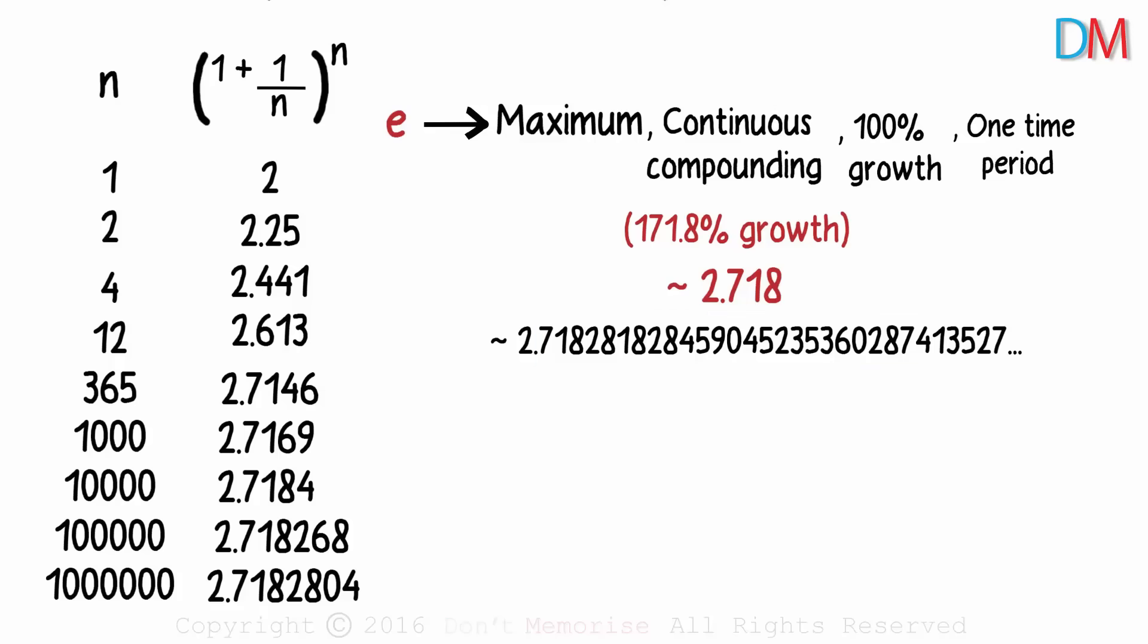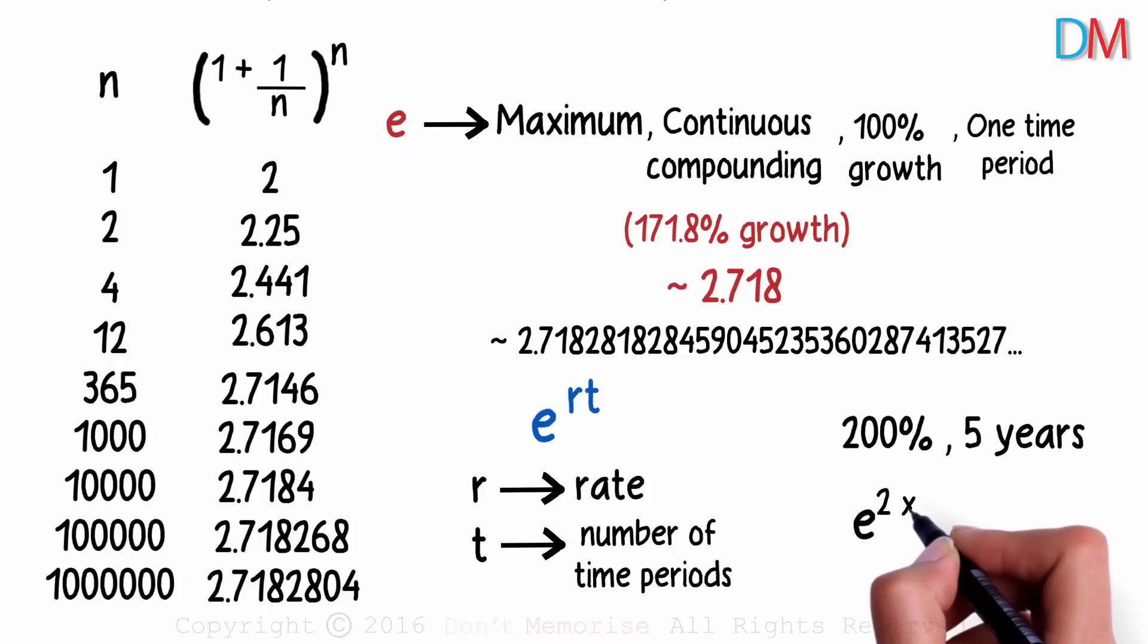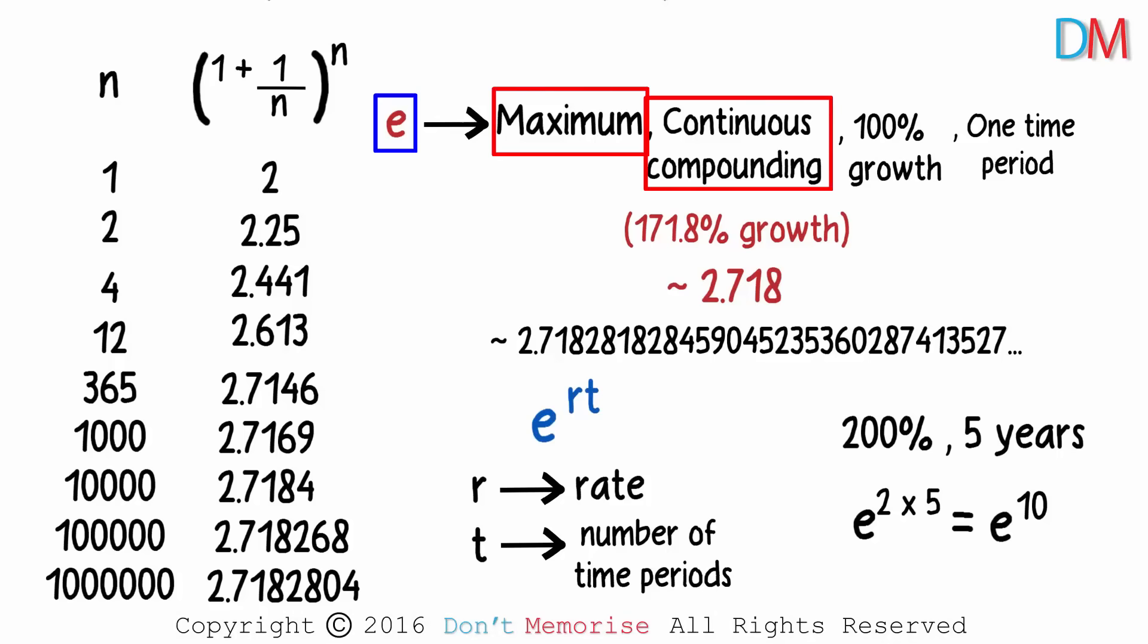Just one last question. What if the growth rate and the time period change? Will E still help us? Absolutely. There's no problem at all. In general, the growth after continuous compounding is given to us as e^(r×t), where r is the rate and t is the number of time periods. So if we have a two hundred percent growth for five years, then it would be defined as e^(2×5). We squared E to include two hundred percent growth, and we raised it to five as there are five time periods. It will give us e^10. E is nothing but the maximum possible result after continuously compounding a one hundred percent growth over one time period.